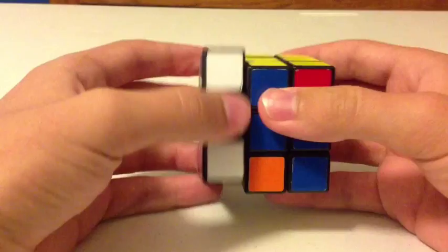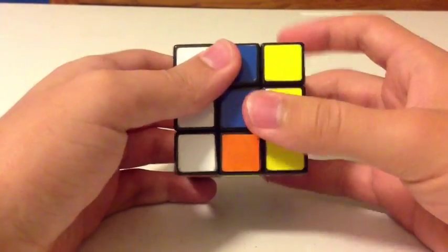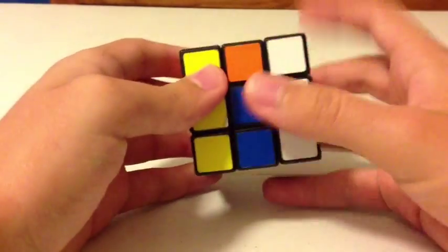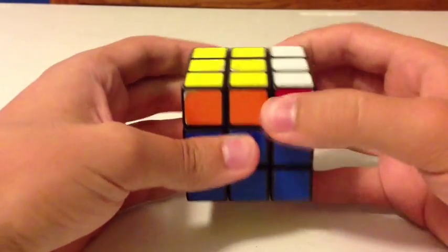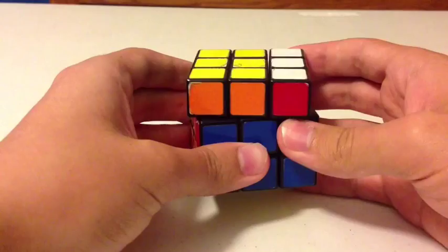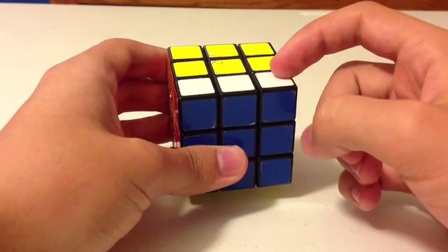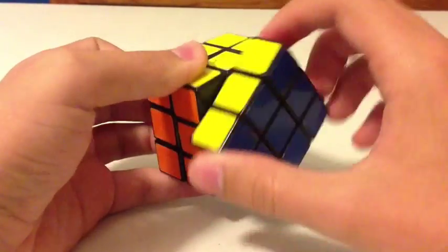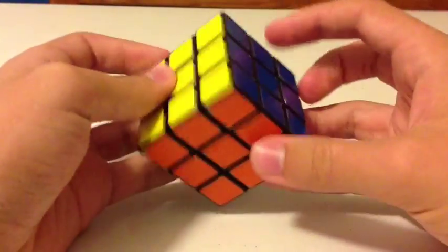So move the up face so that blue matches with blue. Then bring both faces down so you have white on one side and yellow on the other side of the front face. Perform another 180-degree turn of the front face. Bring both sides back up and turn the up face so that the white horizontal bar on the end is facing you. Perform another 180-degree turn. And there, the cube is now solved.